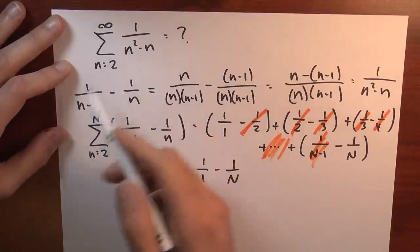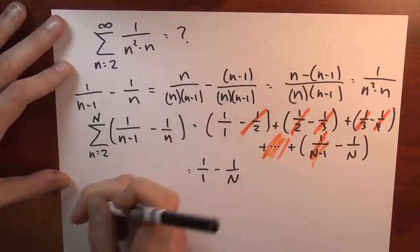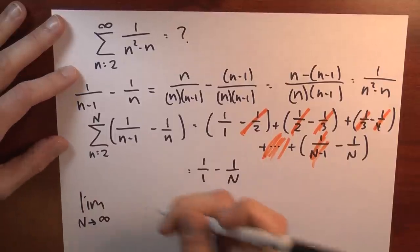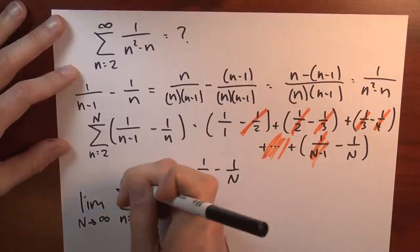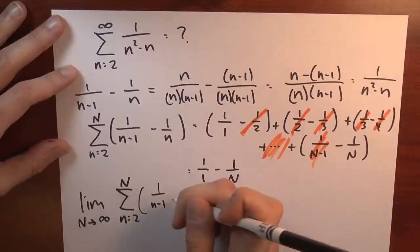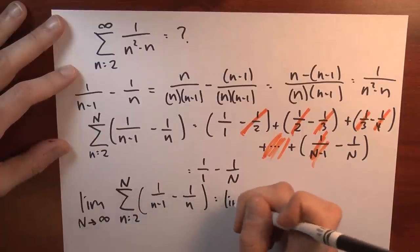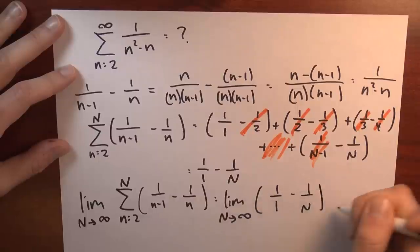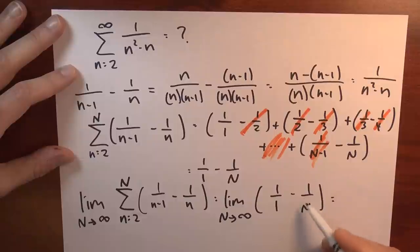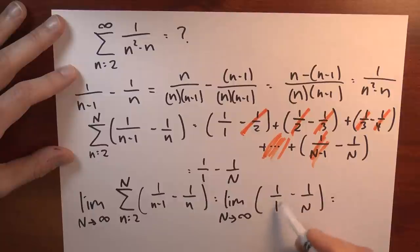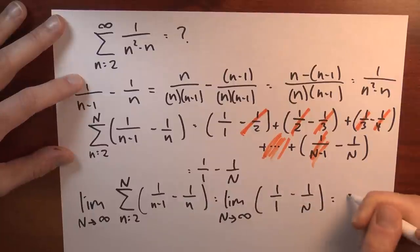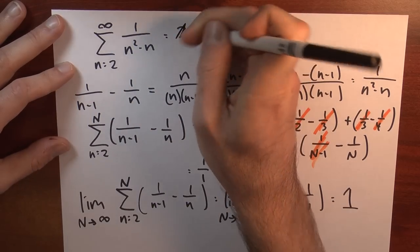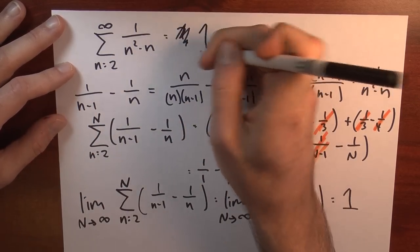To evaluate the infinite series, I take the limit as big N goes to infinity: the limit as big N goes to infinity of the sum from little n equals 2 to big N of 1 over n minus 1 minus 1 over n, equals the limit as big N goes to infinity of 1 over 1 minus 1 over big N. As N goes to infinity, 1 over N goes to 0, so this limit is 1. That means this original series not only converges, but its value is 1.